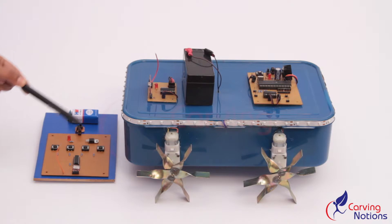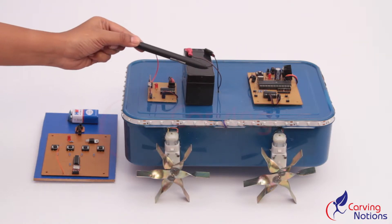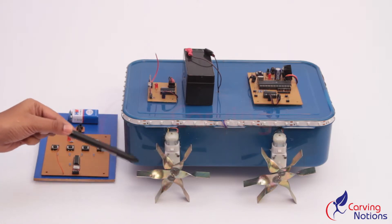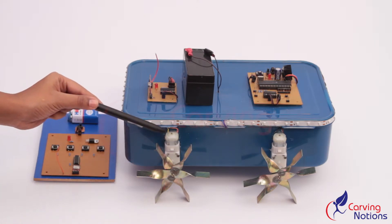This section receives a signal from the transmitter and instructs the microcontroller to move accordingly. Circular pedals are arranged to these DC motor motors, which makes it an all-terrain robot.